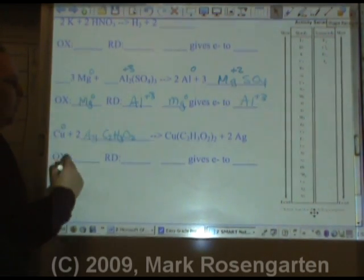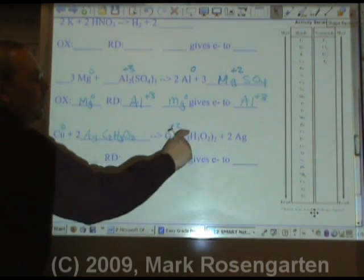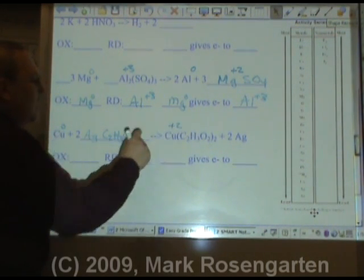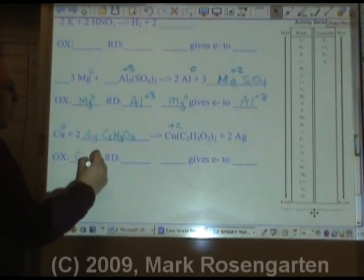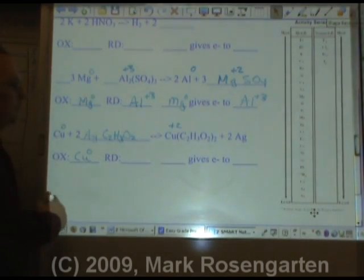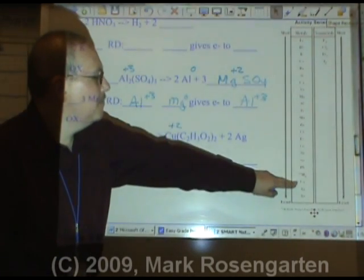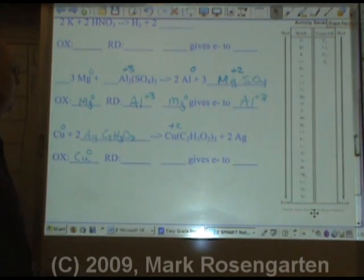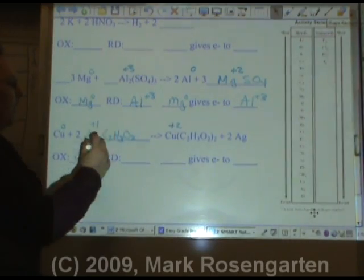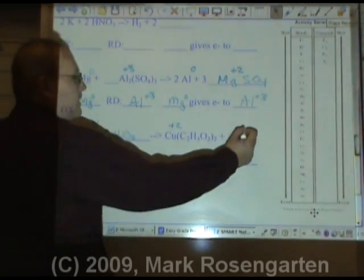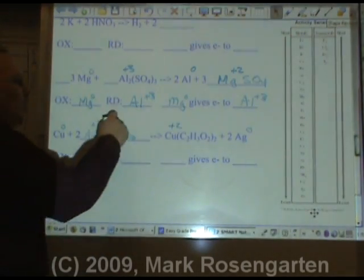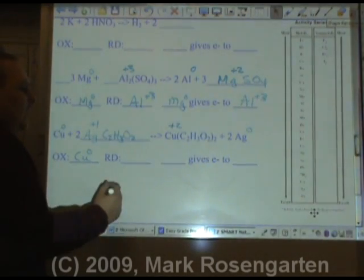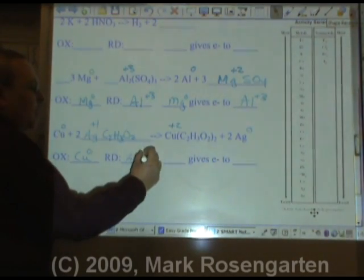Copper is zero, becomes plus two. Because of that two there, I know that copper is plus two. Therefore, copper zero was oxidized. I can prove this. Copper is barely more active than silver. So copper can replace silver. The silver was plus one. That's silver's only charge. And it ends up as zero. So its charge was reduced down to a more negative value. Ag plus one is reduced.